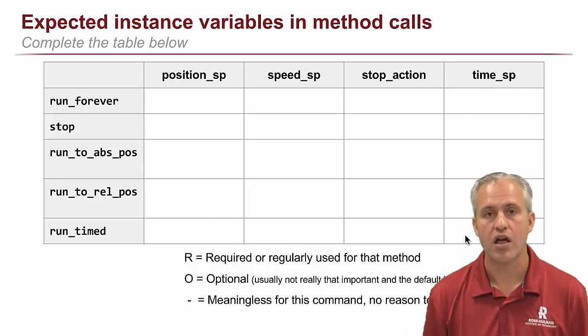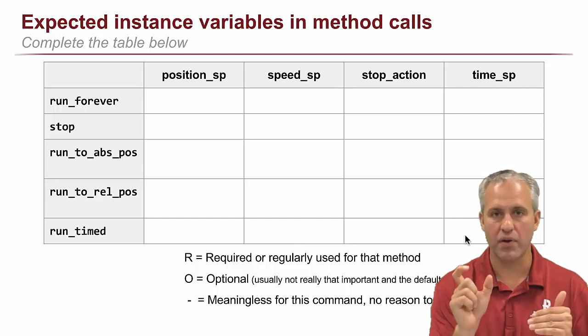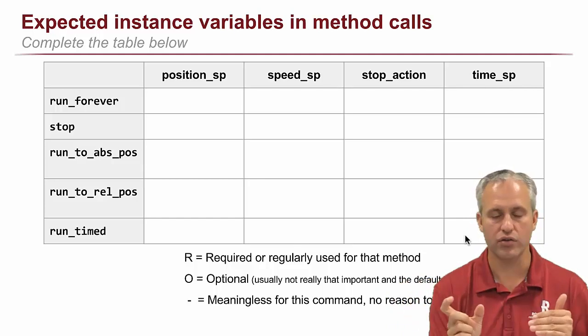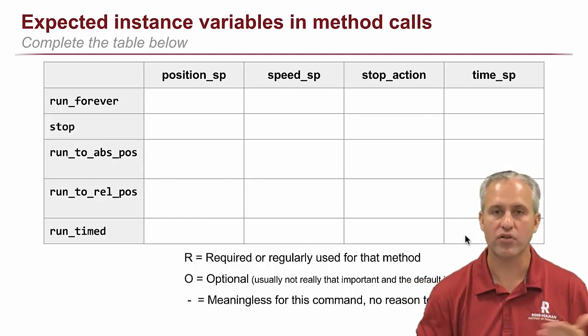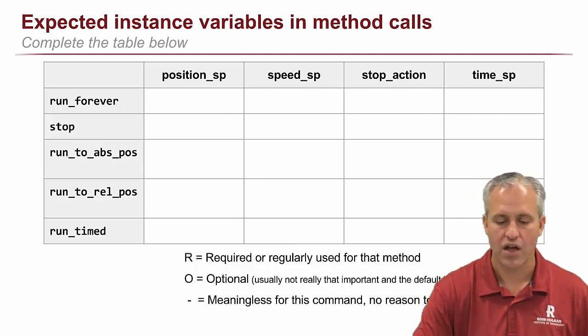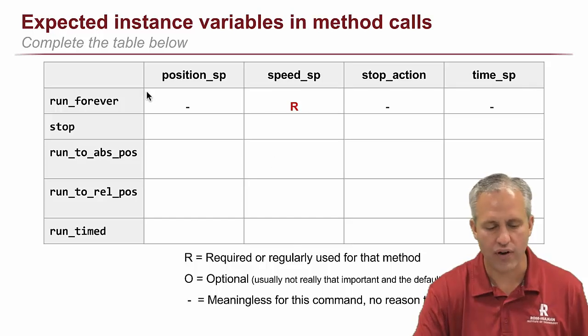To make sure you've got a better idea of what keyword arguments are typically used with each method. I've made a table for you here. What I want you to do is I want you to think about this table one row at a time. So think about this top row. If you call run forever, you can specify any keyword arguments you want, but some of them are basically required, right? Like they're required or at least recommended or regularly used. Some are optional. You can set them if you want. And some are really kind of meaningless for that command. So let's do the top one together. So this top one, run forever.